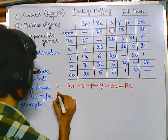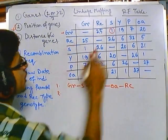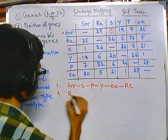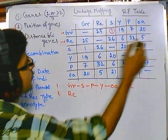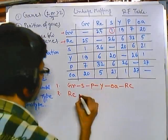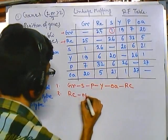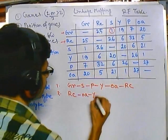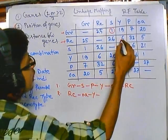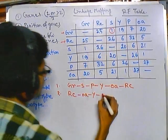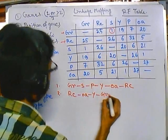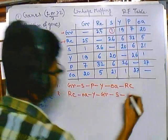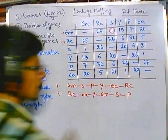For the second row, what is going to be the smallest value? Definitely RC is the starting point. After RC, we are having OA. Then what we get is Y, then after that 25 which is GR, then 26 which is S, then 32 which is P. So the arrangement for the RC row is: RC, OA, Y, GR, S, P.